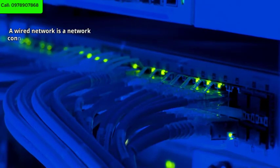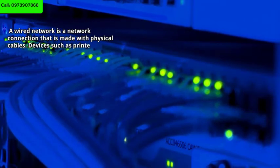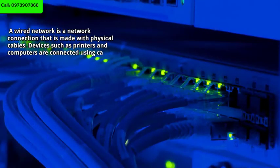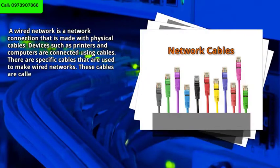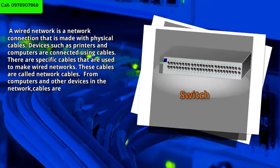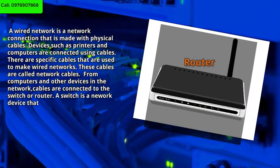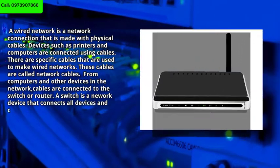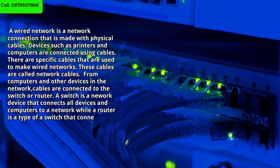A wired network is a network connection that is made with physical cables. Devices such as printers and computers are connected using cables called network cables. From computers and other devices in the network, cables are connected to the switch or router. A switch is a network device that connects all devices and computers to a network, while a router is a type of switch that connects computer devices to a telephone line.